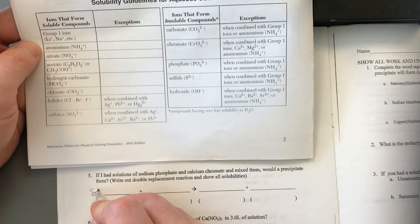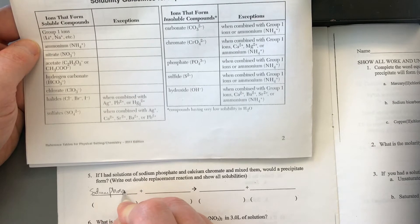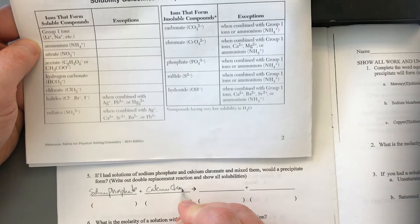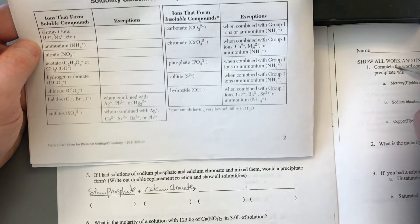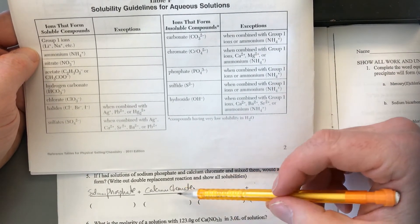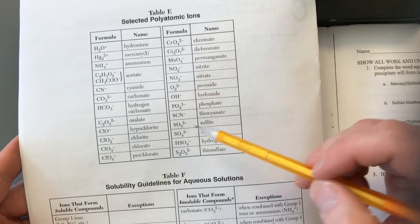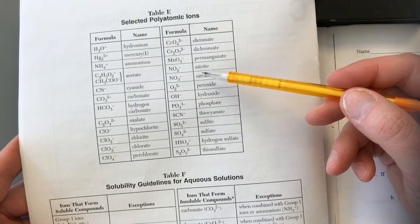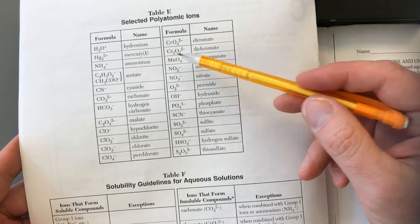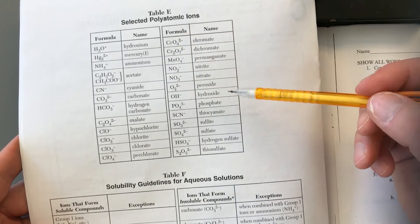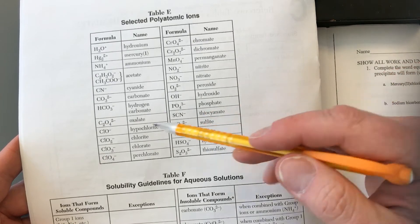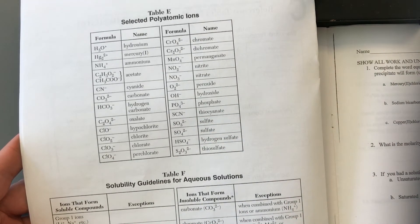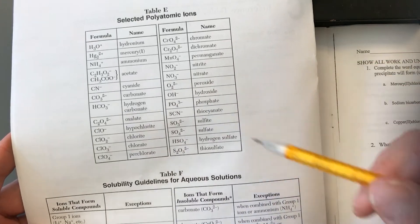For example: if I have solutions of sodium phosphate and calcium chromate and mix them, will a precipitate form? We write out the double replacement reaction. Remember, things that end in -ate or -ite, like phosphate and chromate, can be found on Table E. There are some exceptions — hydronium, mercury(I), hydrogen sulfide, hydroxide, peroxide, cyanide — but generally ATE and ITE endings: find them on Table E.